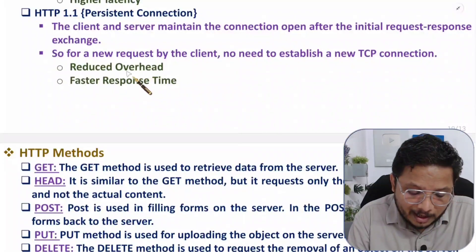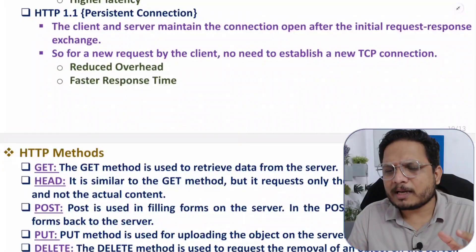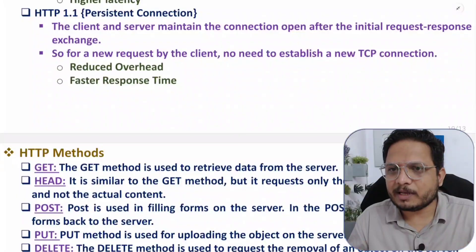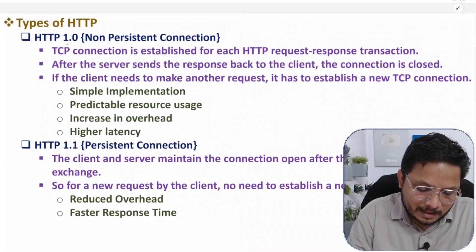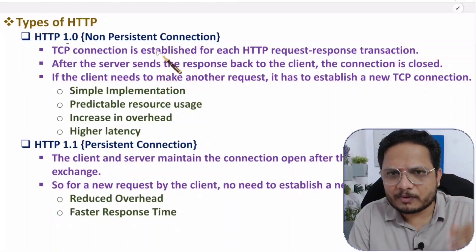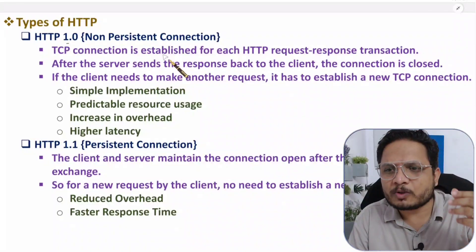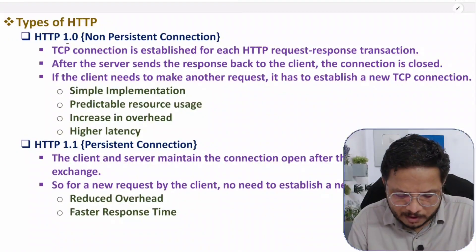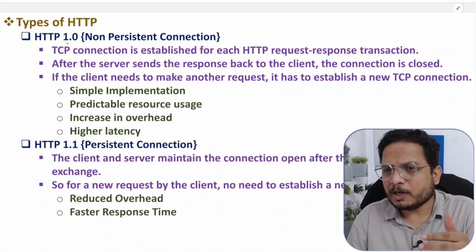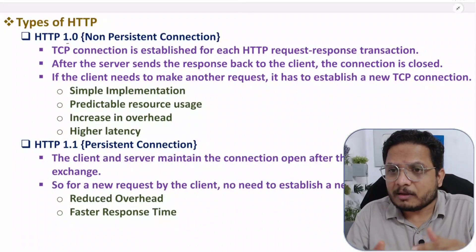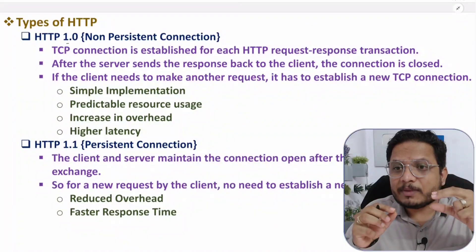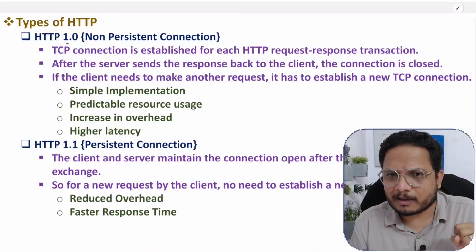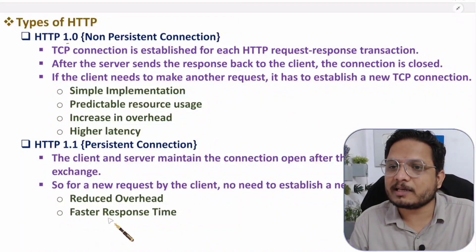Because no new TCP connection is needed in persistent connection, overhead is reduced and there is faster response time. Older websites still use non-persistent connection, but those are rarely visited anymore. In new-generation internet, the majority use persistent connection — the server and client keep their connection open, so whenever the client makes a request, the response is given back immediately.